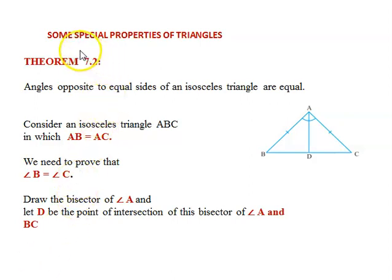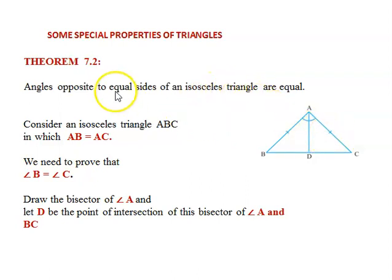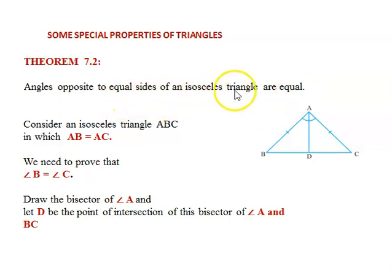After the first two congruence criteria, we are now entering into some special properties of triangles. We have already learnt the angle sum property and the exterior angle property. Now, Theorem 7.2 is about the isosceles triangle. We know that an isosceles triangle has two equal sides. The theorem states: the angles opposite to equal sides of an isosceles triangle are equal. We had learnt this in class 7 as a statement.